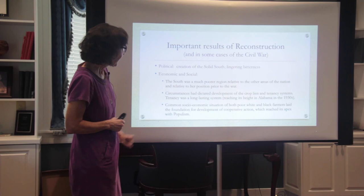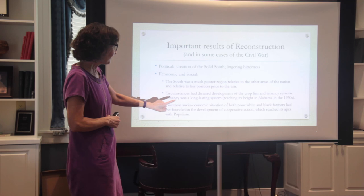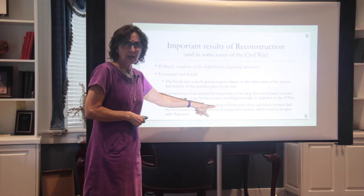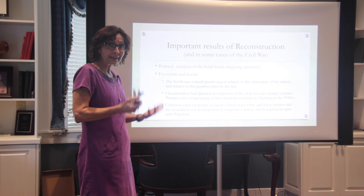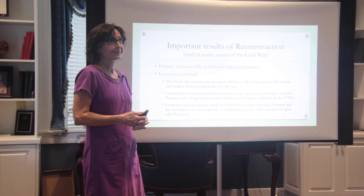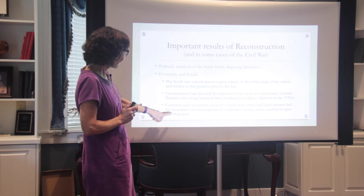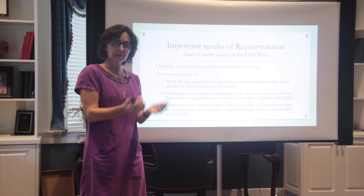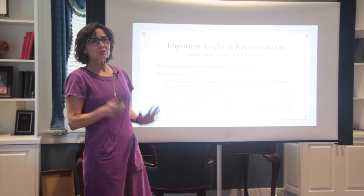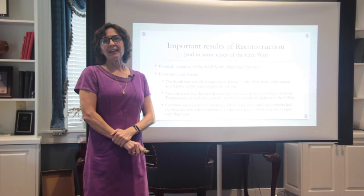Both poor white and black farmers have so much in common in terms of socioeconomic situation. That commonality will finally see expression when we get to populism. In Alabama, the populists are able to bring those concerns together, and then the Bourbon Democrats are able to split them apart — which leads to the Constitution of 1901. Thank you for your time. Email me if you have any questions.